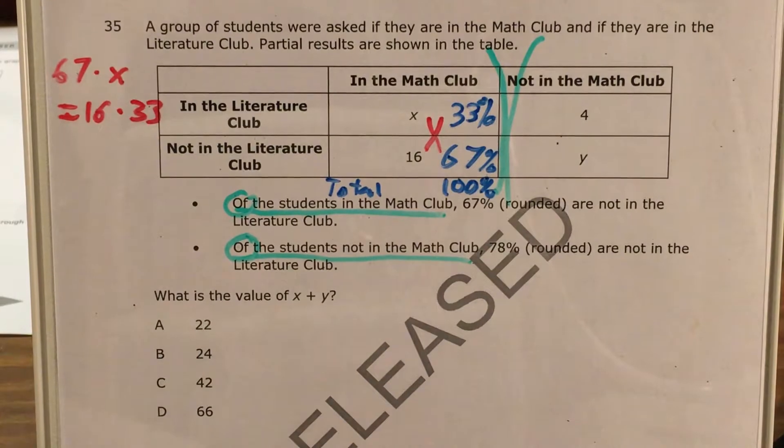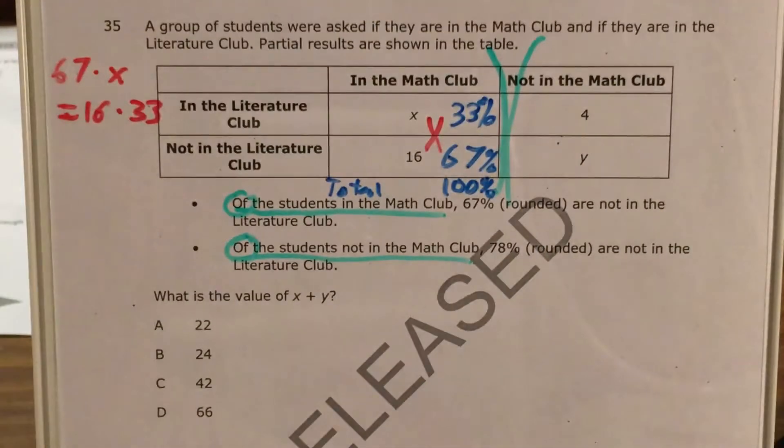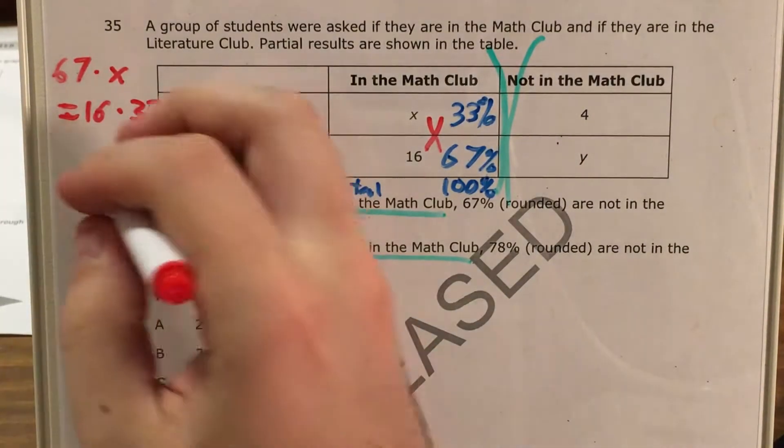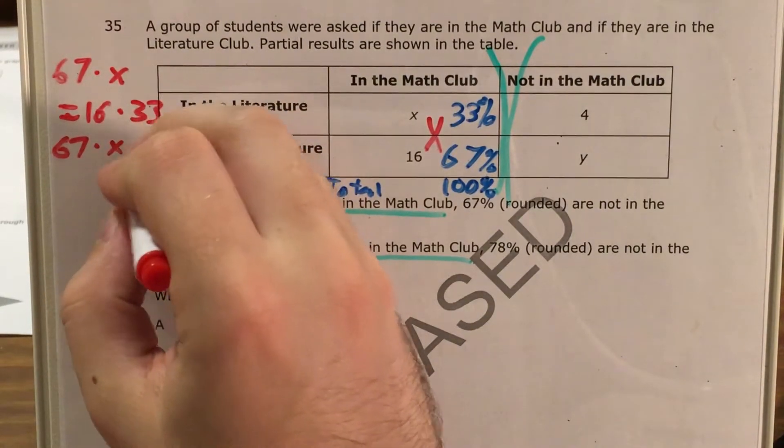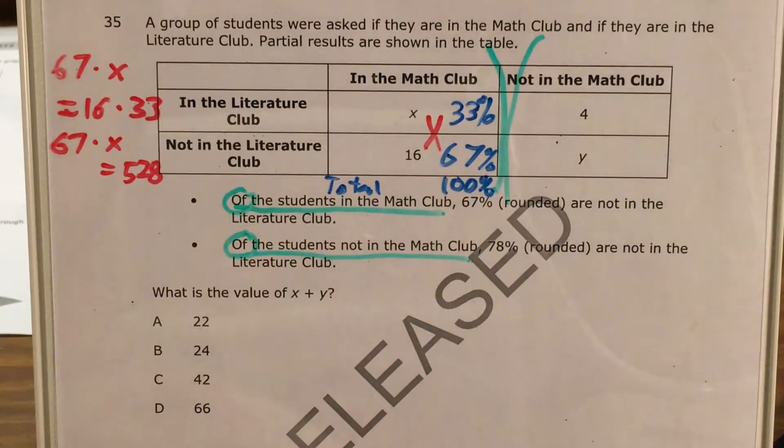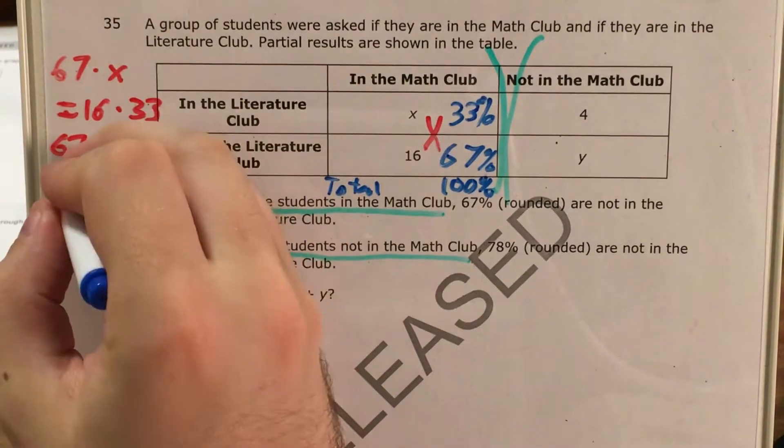So now I figure out that 16 times 33 equals 528. So now I know that 67 times my variable equals 528. If I know that 67 times something equals 528, then I know that 528 divided by 67 equals that same thing.